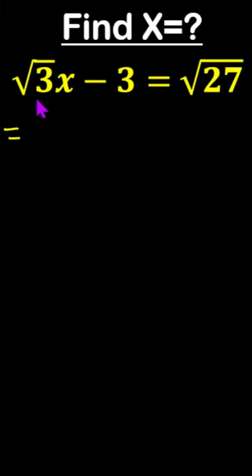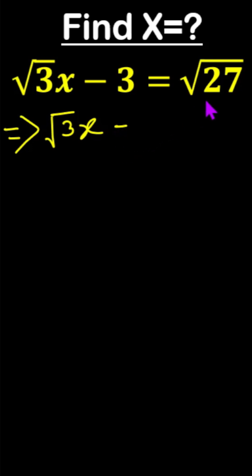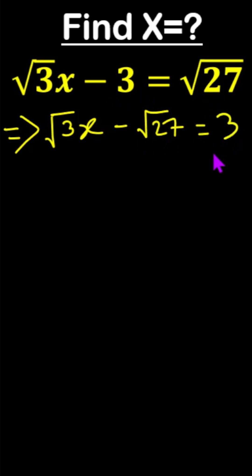Find x: root 3x minus root 27 equals minus 3. We can rewrite this — root 3x, then minus root 27 transferred to the left side equals minus 3, which becomes plus 3.